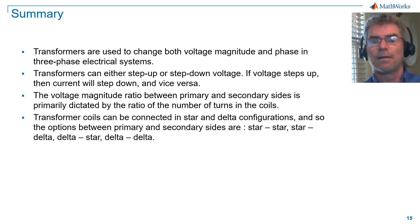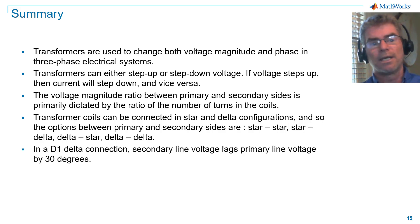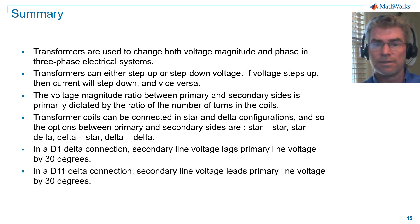Transformer coils can be connected in star and delta configurations, and there are a number of variations possible. In a D1 delta connection, secondary line voltage lags primary line voltage by 30 degrees. In a D11 delta connection, secondary line voltage leads primary line voltage by 30 degrees.